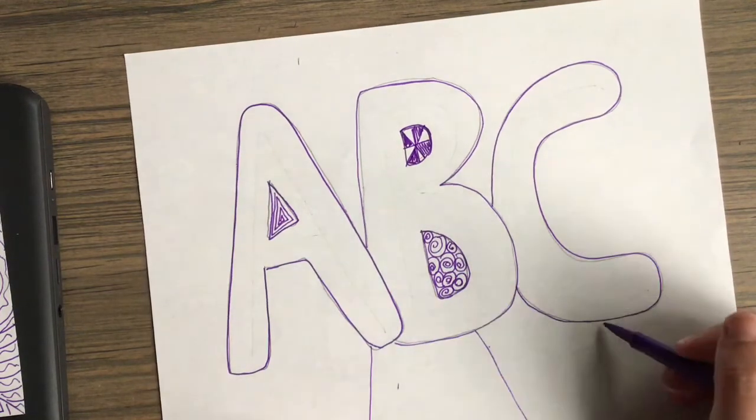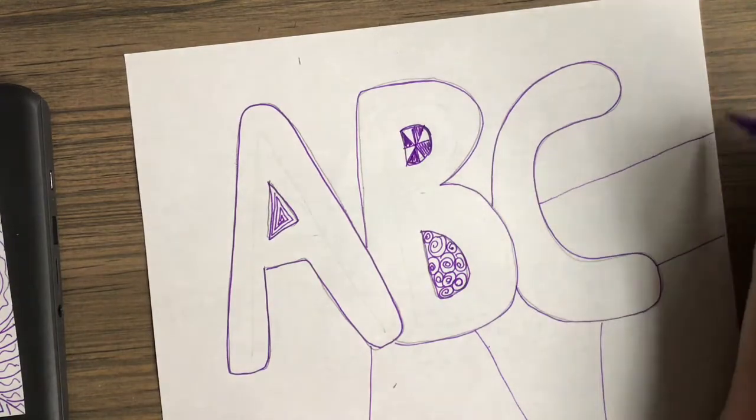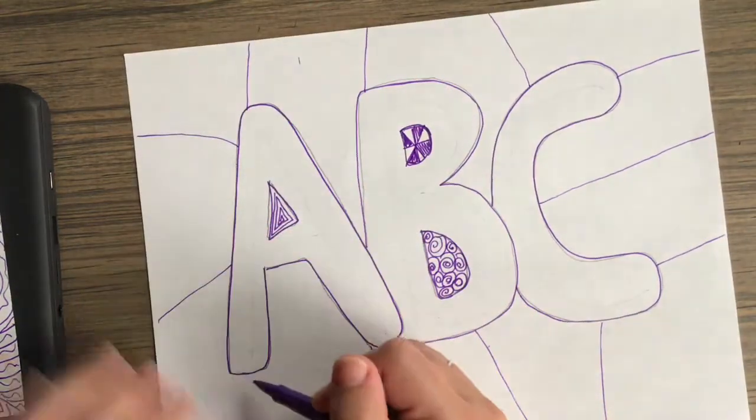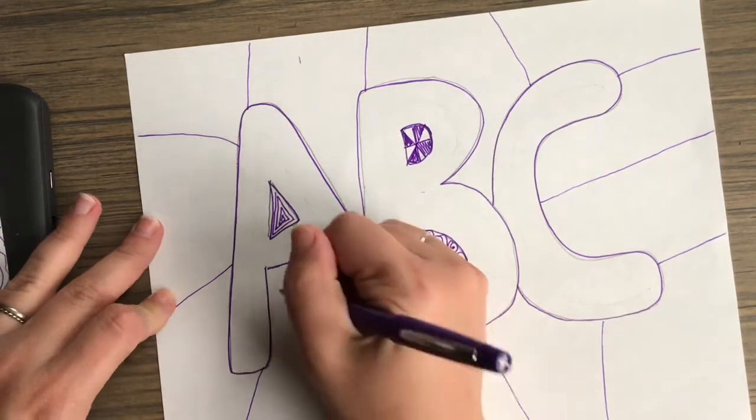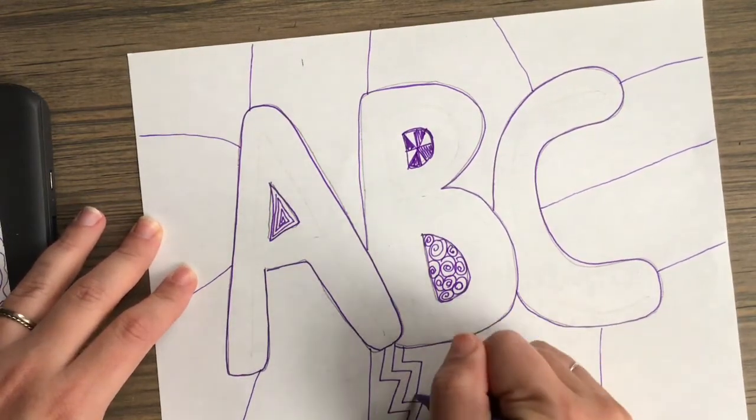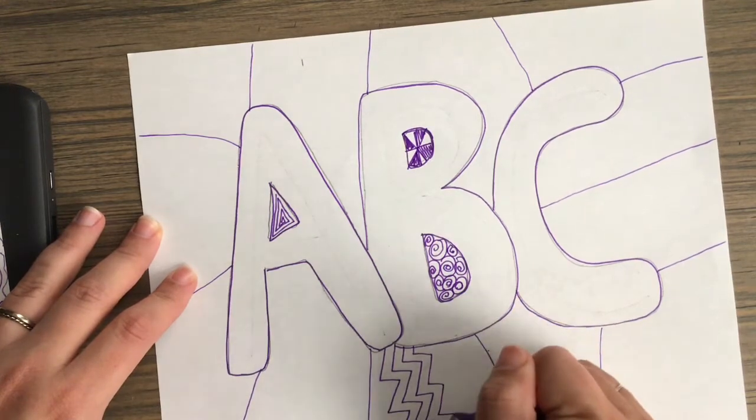And the rest of the background or negative space is a really big space. So I like to break it up into sections by drawing lines coming from the letters to the edge of the paper. And that'll give me some smaller sections to put my Zentangle designs.